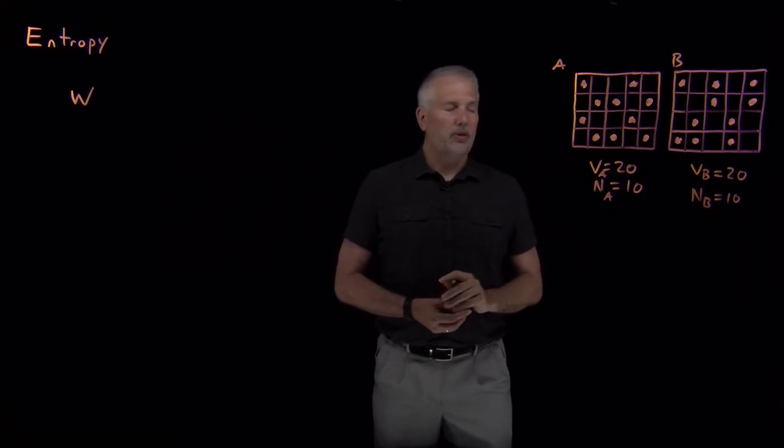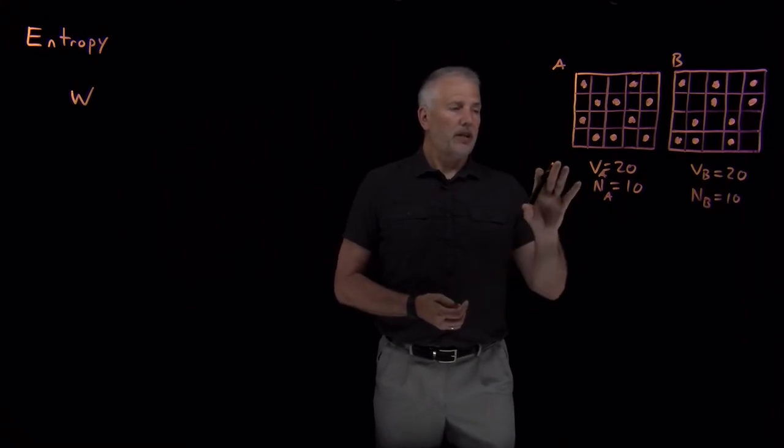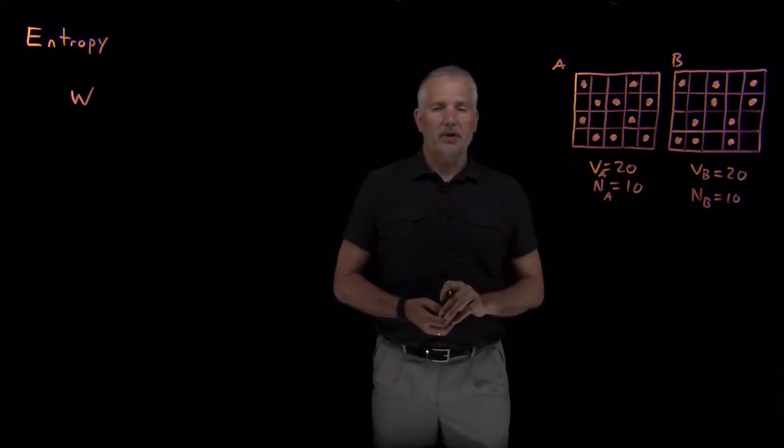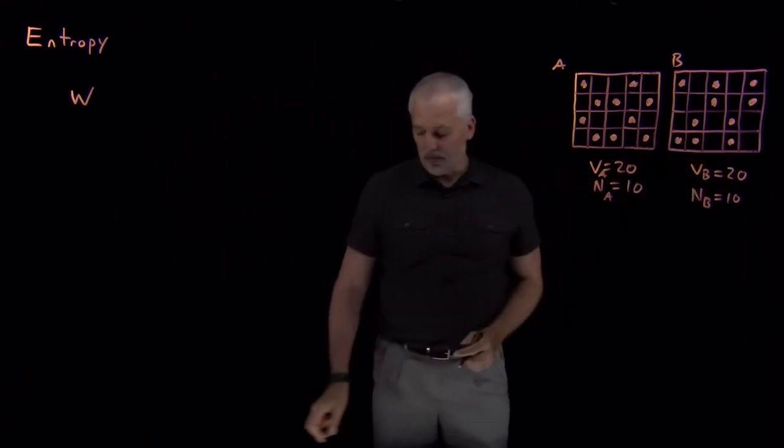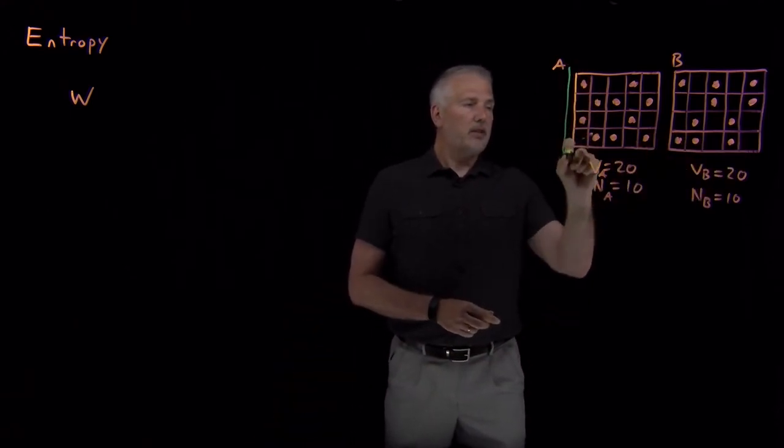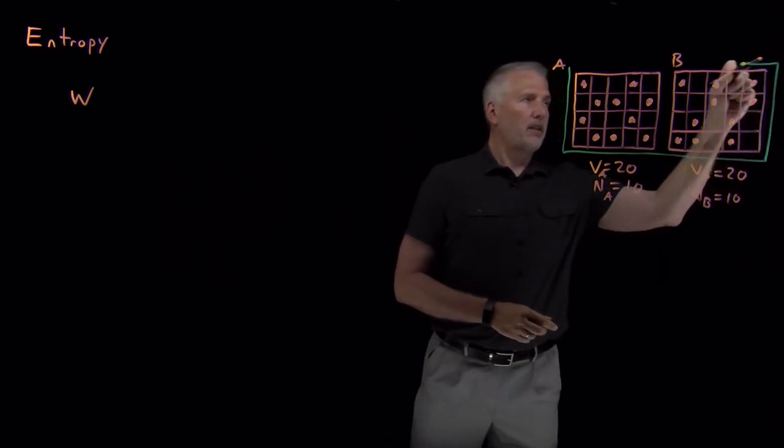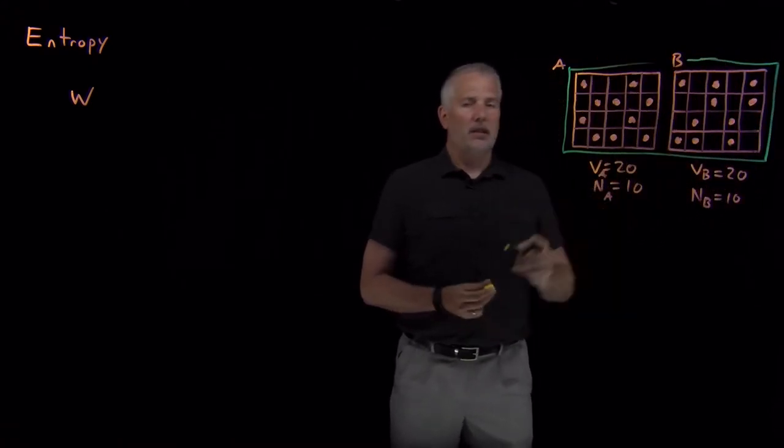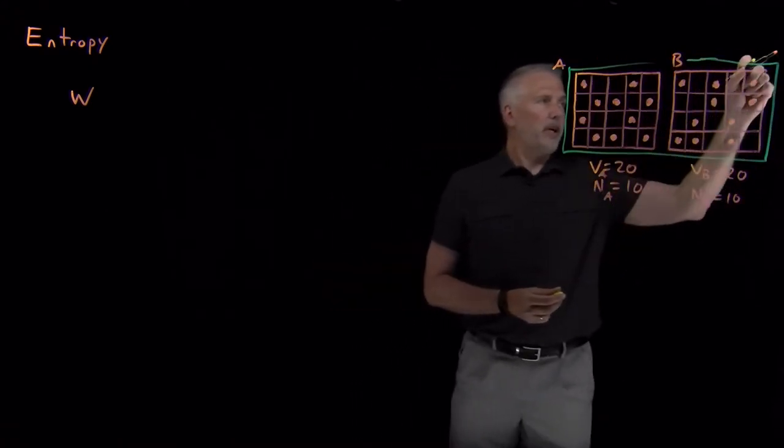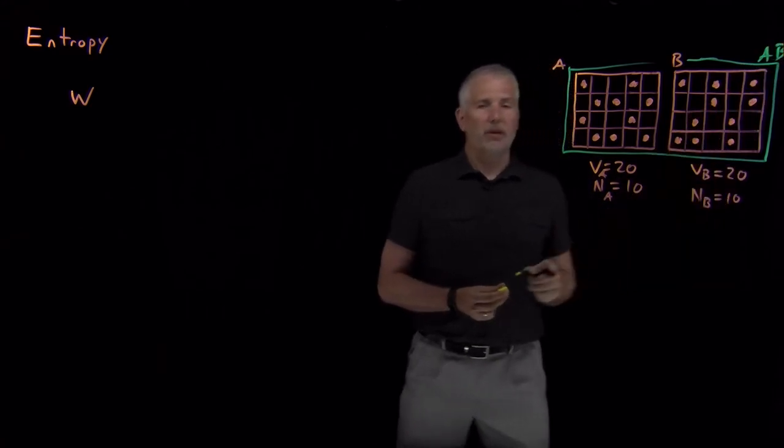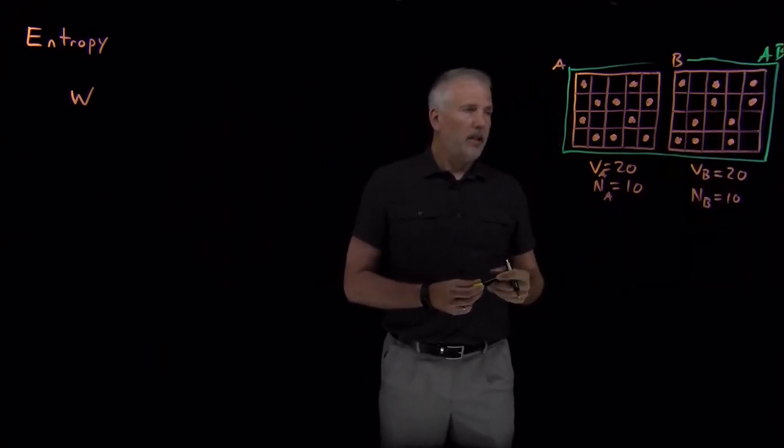So now what we want to do to think about whether the properties of the system are extensive or intensive is combine the two systems together. So if I say, let's combine systems A and B together and make this combined system AB where I've put them both together, then for AB,